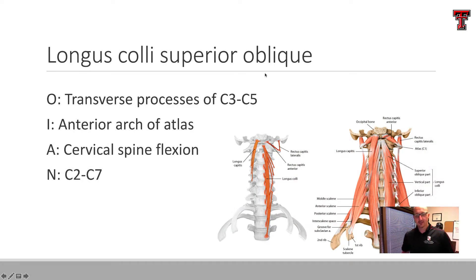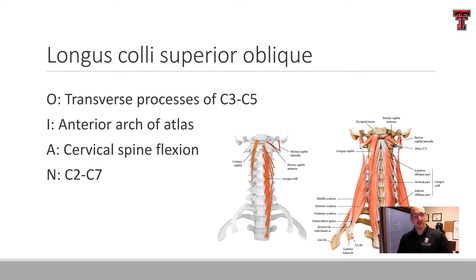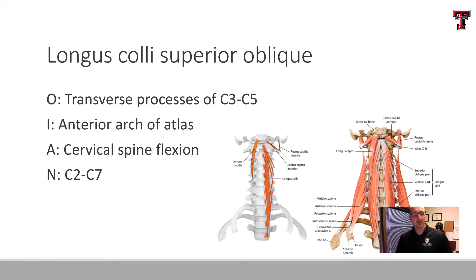The colli group — longus colli runs down the anterior aspect, attaching to the vertebral bodies and transverse processes of the middle cervical vertebrae, and inserts into the anterior arch of the atlas. Since it's anterior, think of it like the abdominals — abs are anterior flexors. So longus colli, being anterior, is also going to be largely a flexor. It gets its innervation through those corresponding nerve root levels.